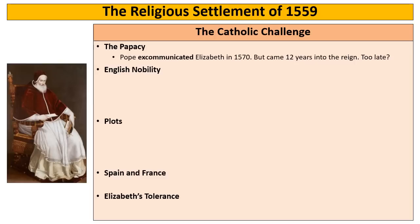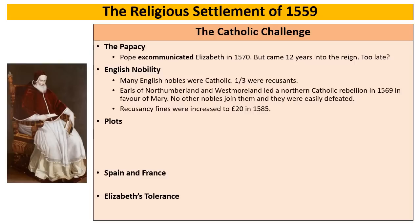The English nobility were again in theory a problem — around a third of English nobility were recusants, meaning we can infer they were Catholic. Two English nobles, the Earl of Northumberland and Westmoreland, led a Catholic rebellion in 1569 in favour of Mary Queen of Scots. However, no other nobles joined them and they were easily crushed. In response, recusancy fines were increased to £20 — a much harsher sum that even nobles would struggle to pay.